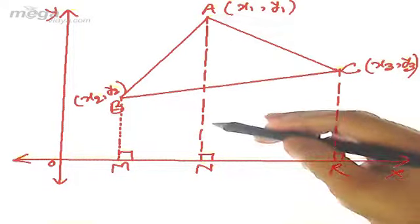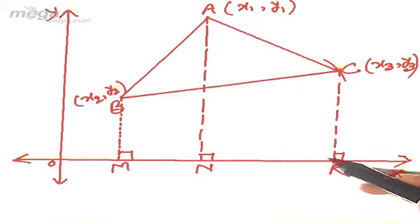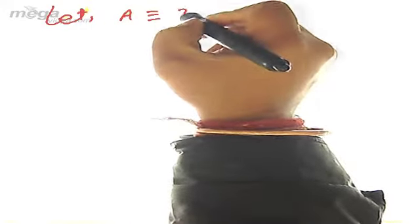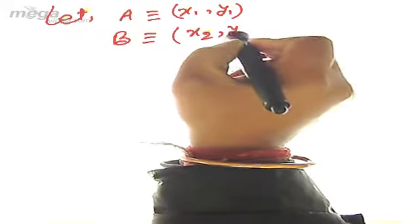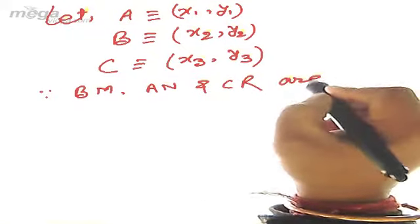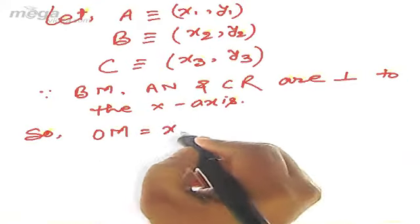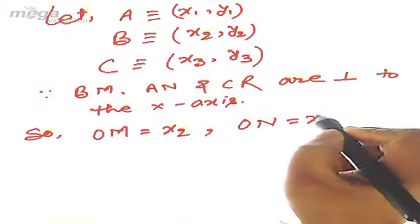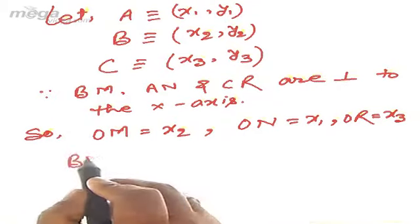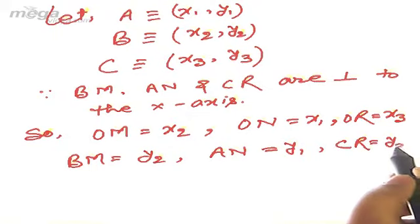If you find the area of one trapezium plus the area of another trapezium and subtract the area of the third trapezium, you will get the area of the triangle. According to the figure: A is (x1, y1), B is (x2, y2), C is (x3, y3). BM, AN, and CR are perpendicular to the x-axis, so OM = x2, ON = x1, OR = x3, BM = y2, AN = y1, and CR = y3.